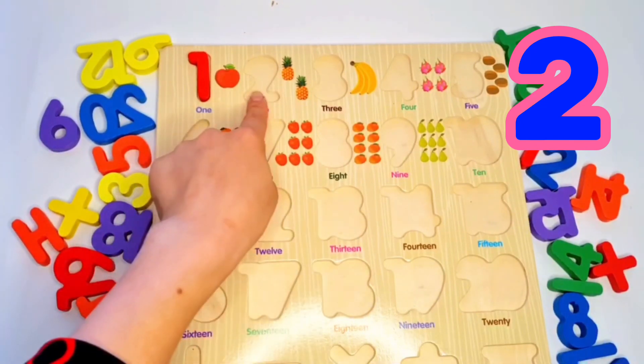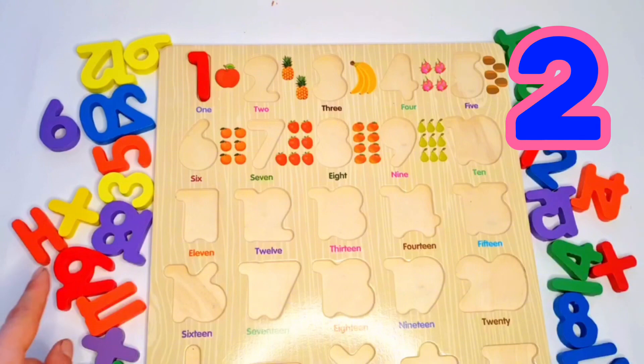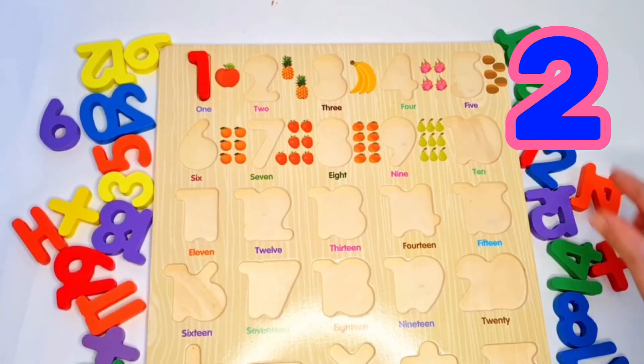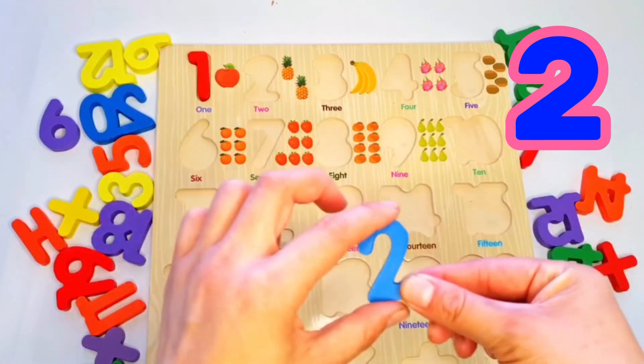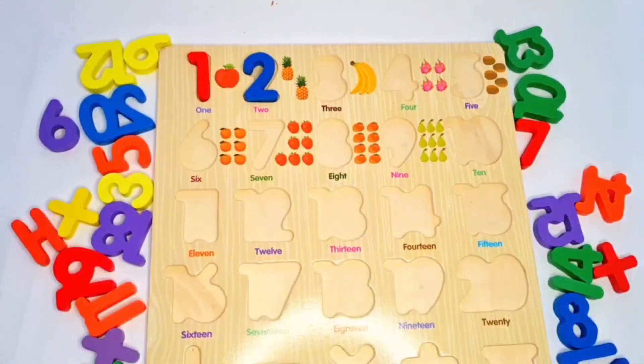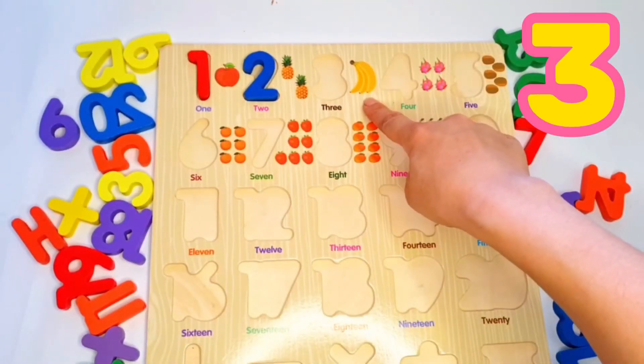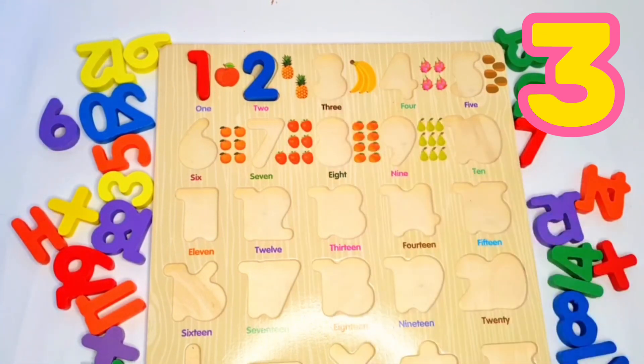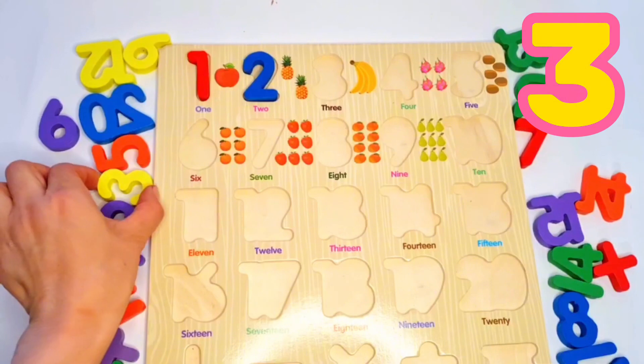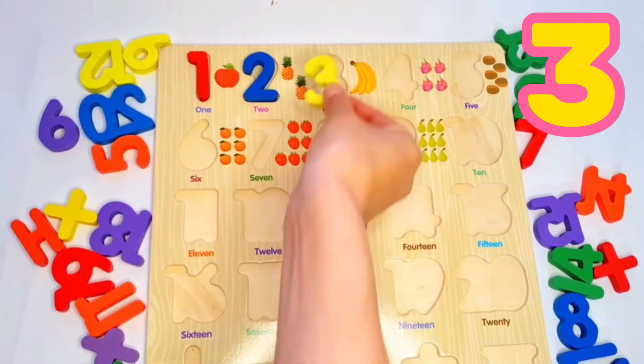We must here put two, number two. Yeah, blue number two. Here three bananas. We must put here three, number three. Yeah, yellow three.